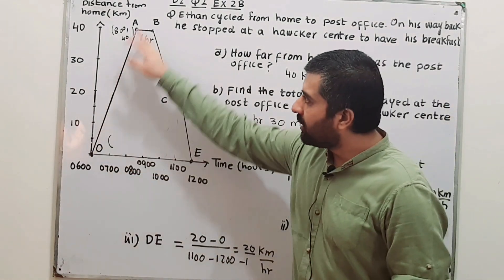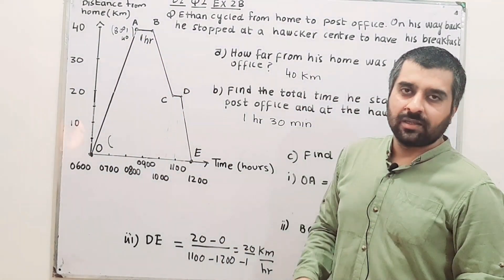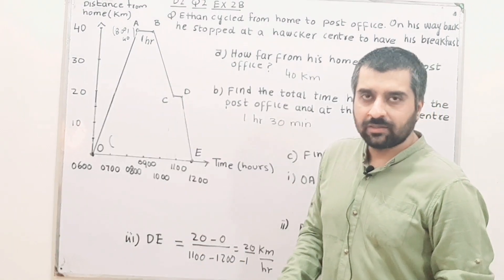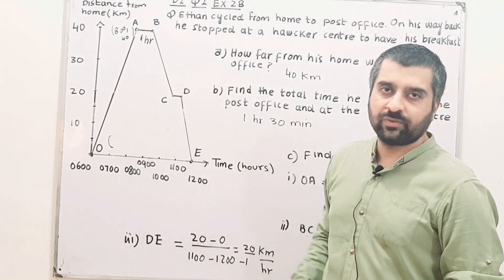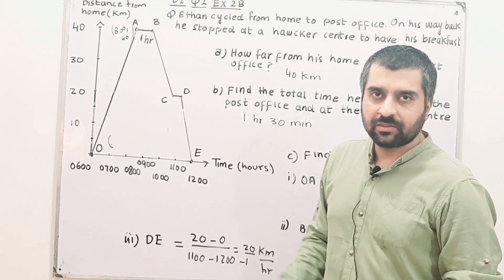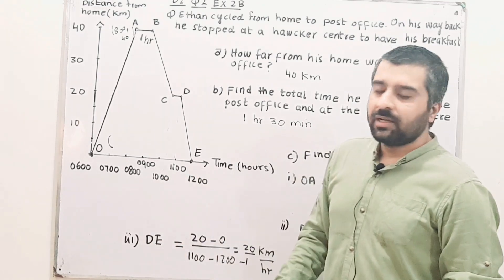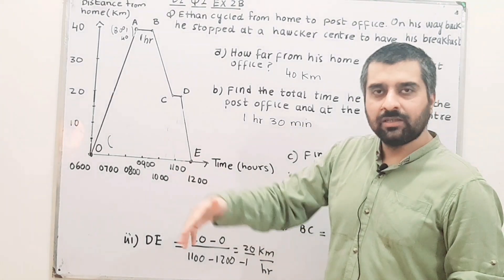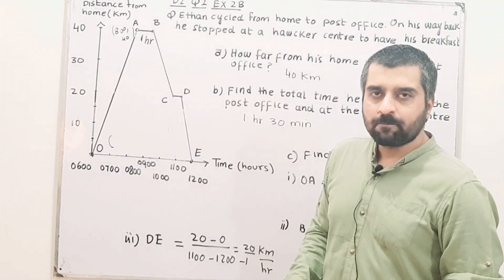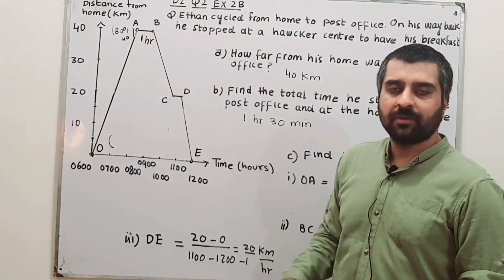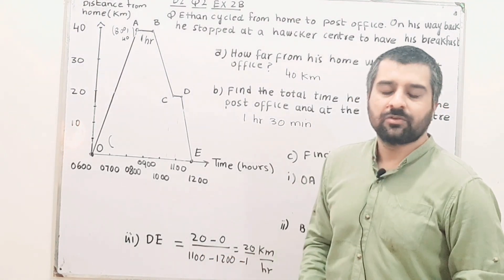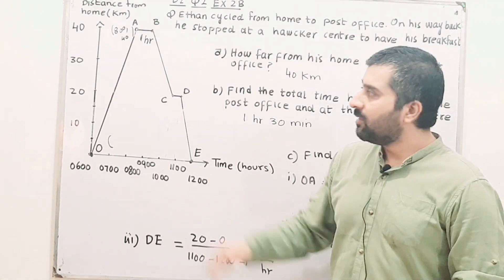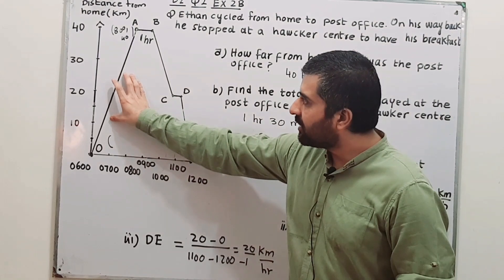From O to A, he is traveling from home to post office with some speed that we will be calculating. From B to C, he is traveling again, and from D to E, he is traveling. We will calculate the speed for sections OA, BC, and DE by finding the gradients.